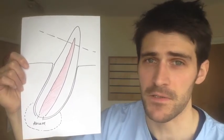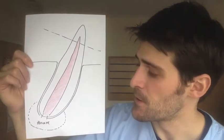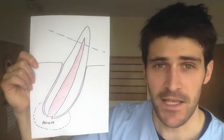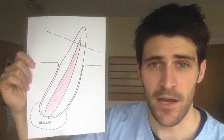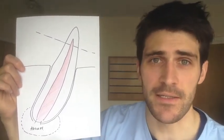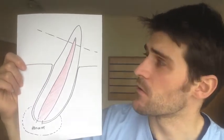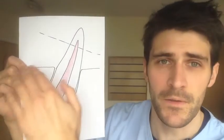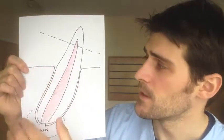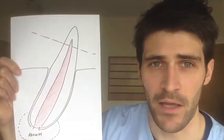Now this abscess can look like a swelling, or sometimes it'll actually break through causing bleeding and pus and all sorts of disgusting things. So that's a dental abscess — that's how we get them. It usually needs some sort of trauma to the crown exposing the pulp cavity.